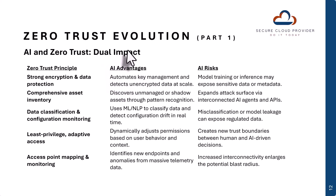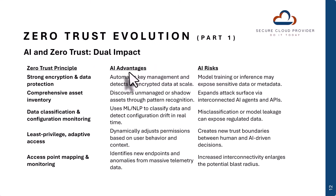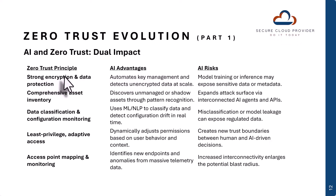Next, I want to get into the main objective of this video, which is to discuss zero-trust evolution, particularly as it relates to AI and the dual impact that it can have on zero trust. AI can both present risks and can also solve for risks. For strong encryption and data protection: if the encryption state was not enforced prior to data ingestion, then model training or inference may expose sensitive data or metadata. On the other hand, AI can automate key management and can detect unencrypted data at scale.